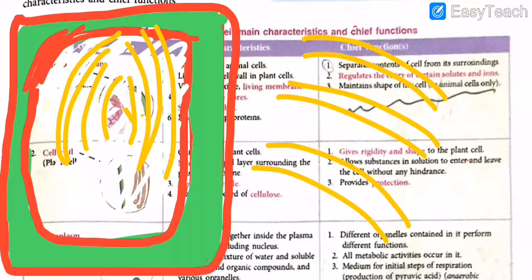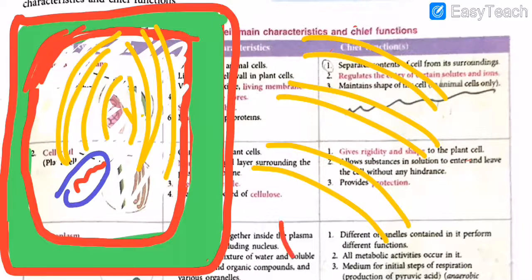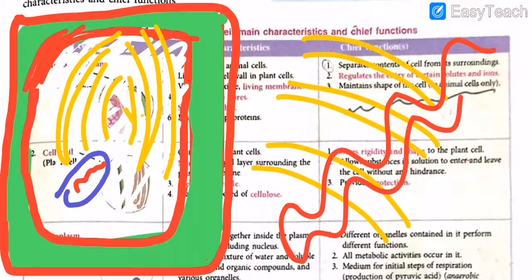Fifth one: the mitochondria — the powerhouse of the cell. It is of various shapes but usually a sausage-like shape, almost like a bacteria. It is double-walled and its inner membrane is thrown into folds. These inner folds are called cristae. If you've ever seen a mitochondria, the inner side has these folds — they are double-walled inner folds called cristae.